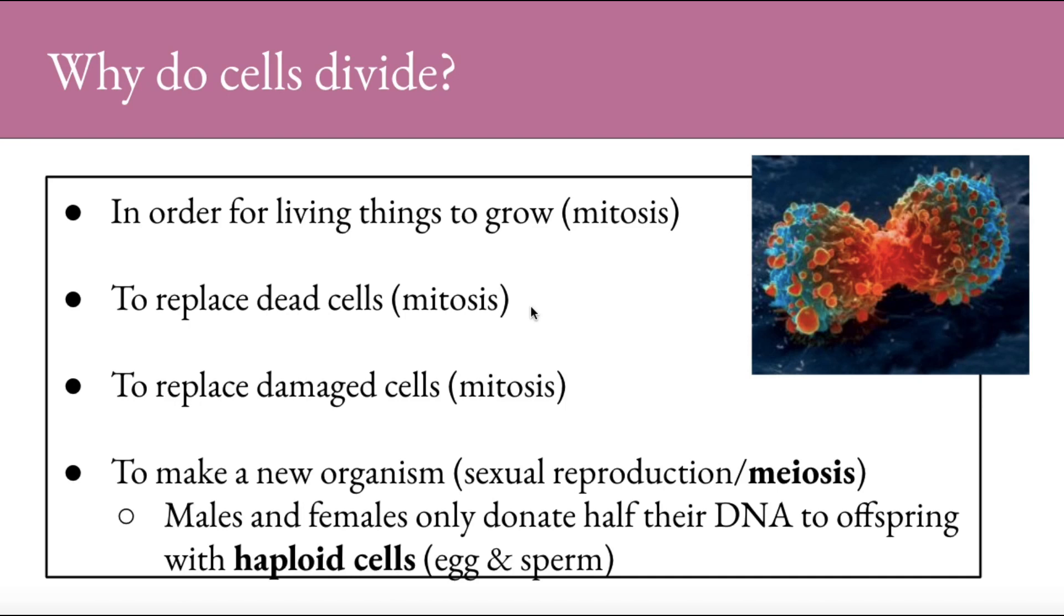However, when the sperm and the egg are made, they only want to donate half those chromosomes, and this cell is called haploid, half the number of chromosomes, 23 chromosomes in the sperm, 23 chromosomes in the egg. The picture shown here is a photograph from the National Institute of Health showing what happens when a cell goes crazy and is uncontrolled division. It is also known as cancer.